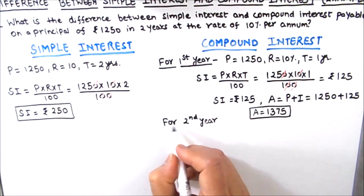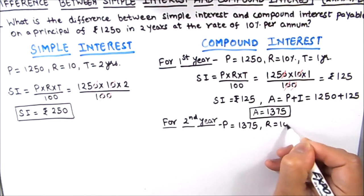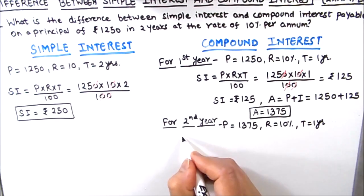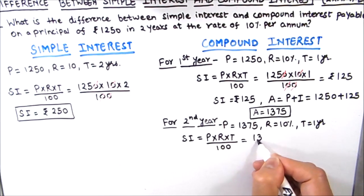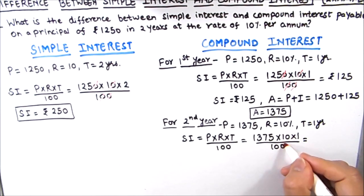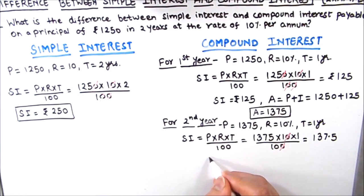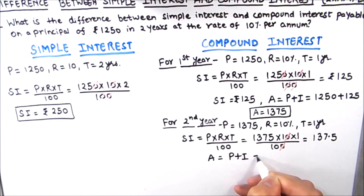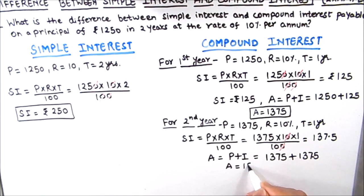Now we will find the interest for the second year. For the second year, the principal amount will be 1375, rate of interest will be 10%, and time will be one year. Simple interest equals principal times rate of interest times time divided by 100, which is equal to 1375 times 10 times 1 divided by 100. The two zeros get cancelled and we are left with 137.5. Now we find the amount: principal plus interest equals 1375 plus 137.5, which gives an amount of rupees 1512.5. This is the amount at the end of the second year.